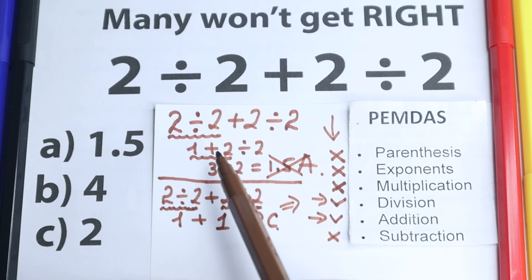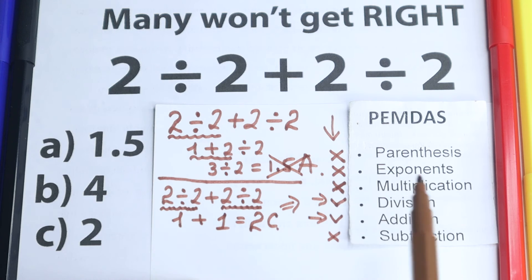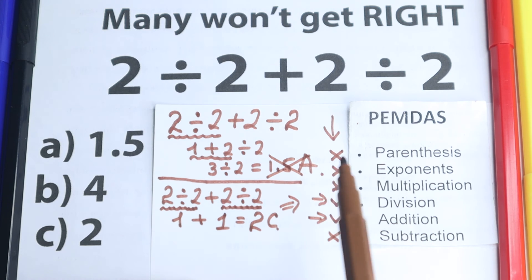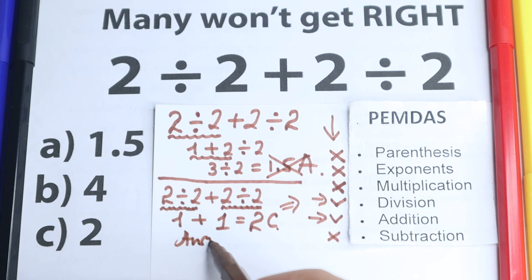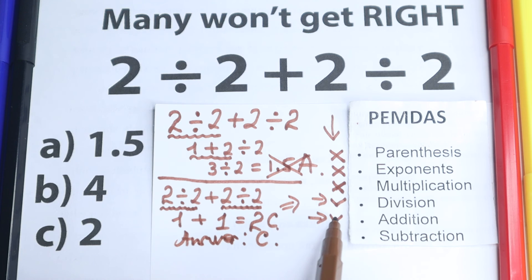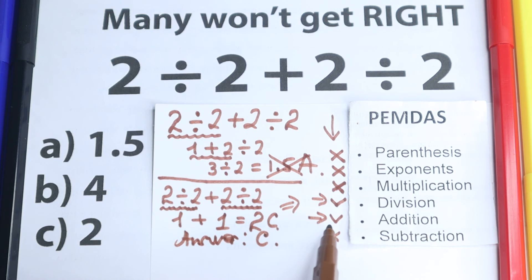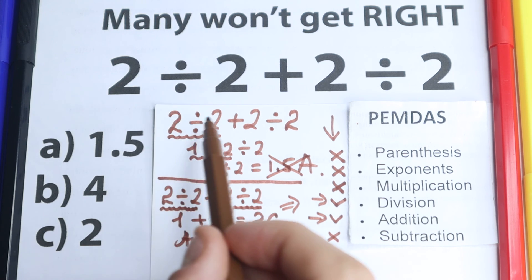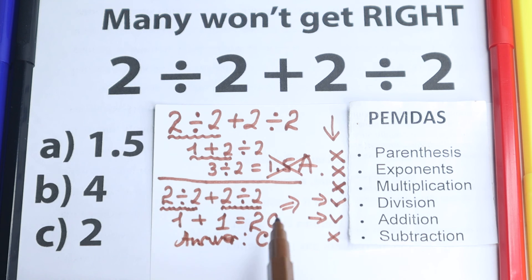Our correct answer is option C. In other words, we need to do division before addition — this is our main rule that we need to learn. Division before addition. Going from left to right — division, addition, division — is the absolutely wrong order, and the correct answer is option C according to PMDMC.